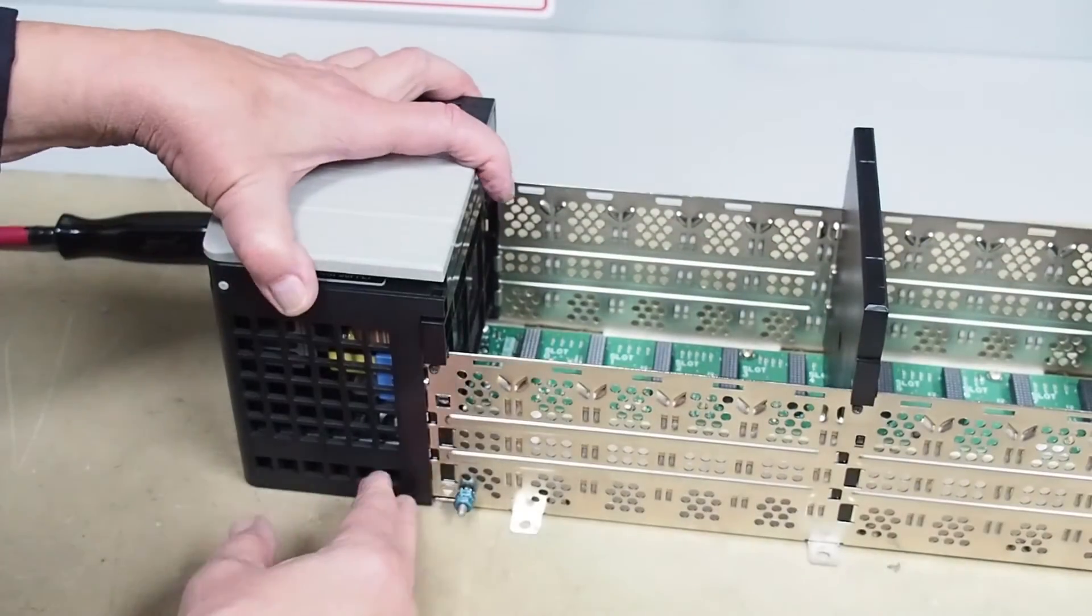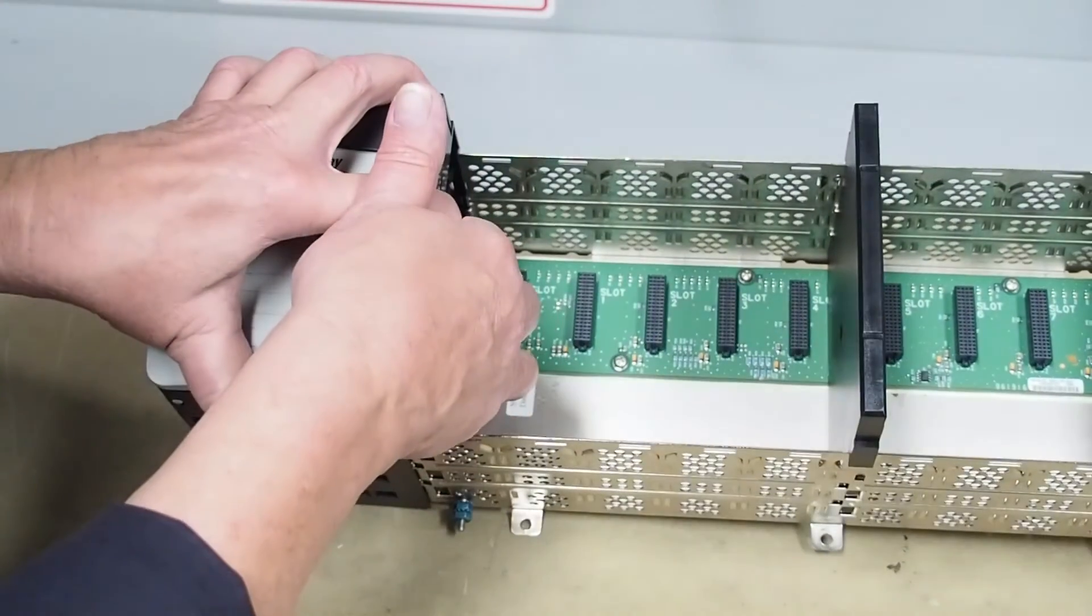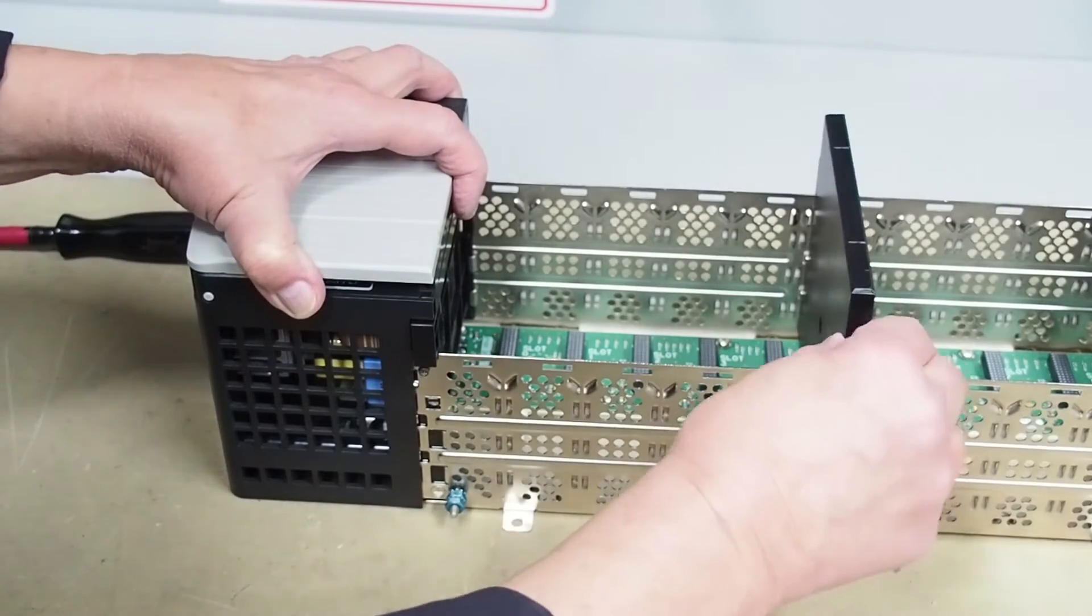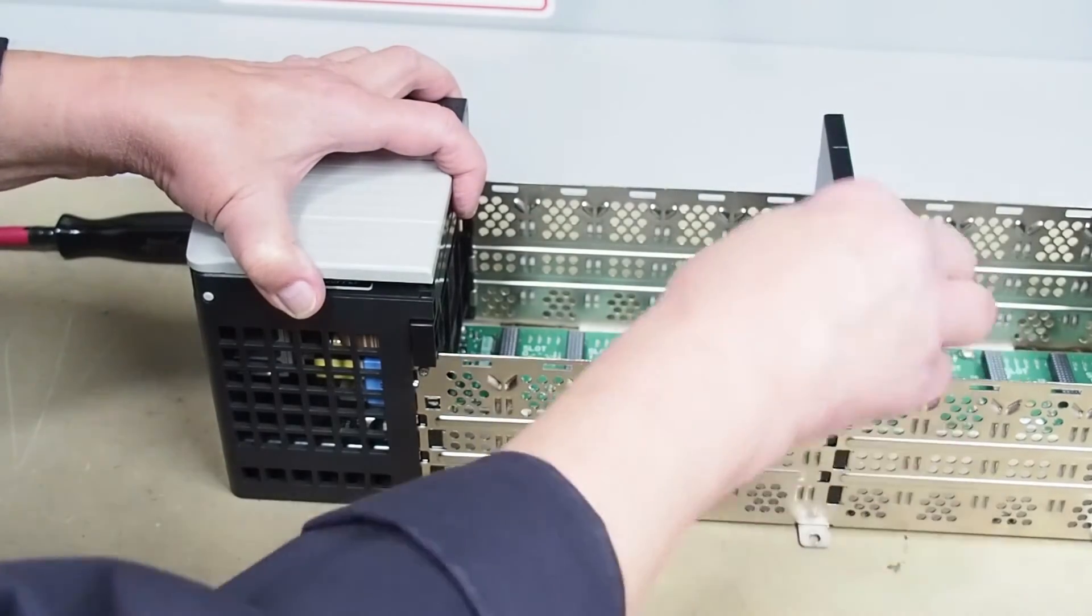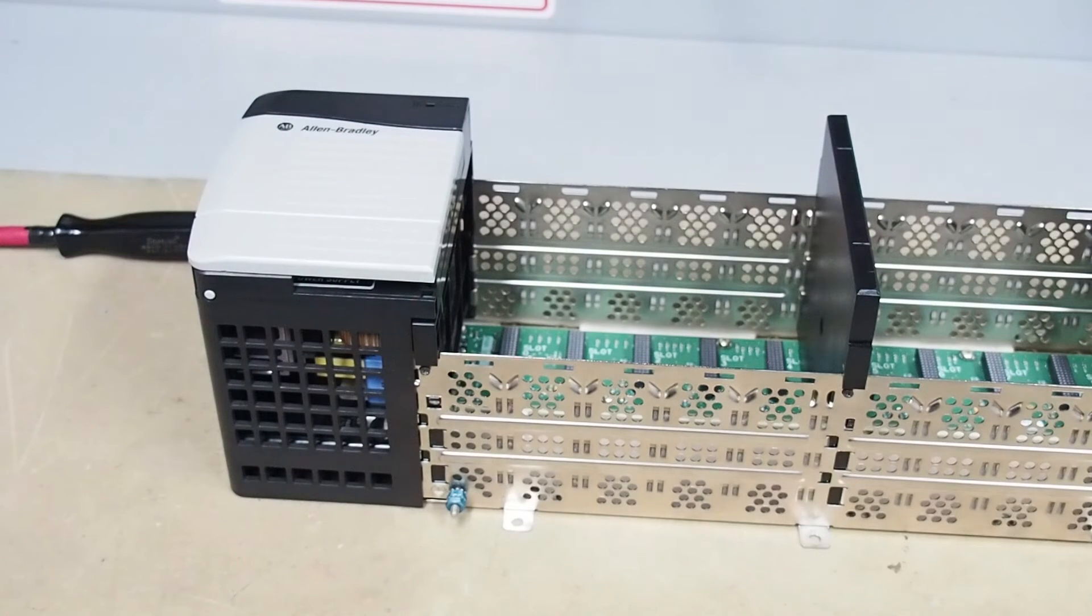So there we go. Now because of the manufacturing tolerances, that's why this is loose in the slot like this one. There's not a lot of play but there's a little bit. So now we're ready to insert a module.